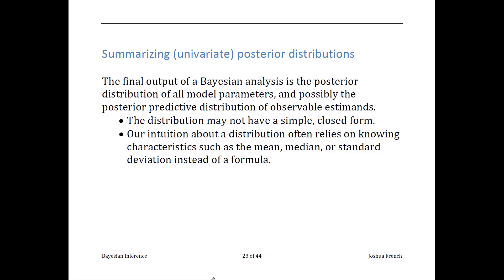The inferential goal of Bayesian analysis is to determine the posterior distribution, or sometimes the posterior predictive distribution. The posterior distribution may not be available in closed form, and because of that, we often want to summarize its properties. Even if we do have a closed-form expression for our posterior distribution, we still might want to summarize it in order to get a better intuition about its properties.